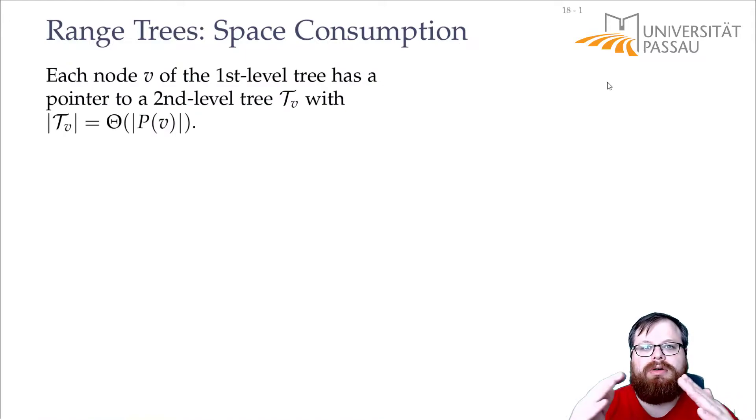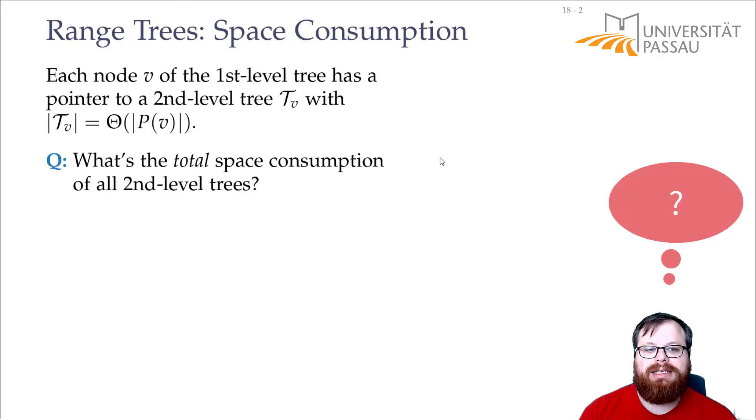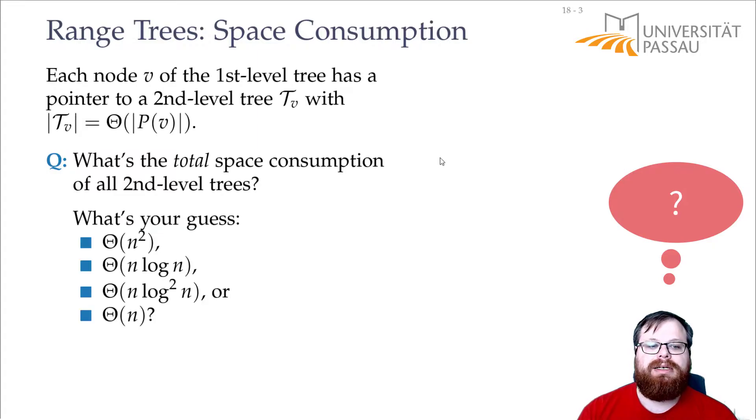Every node in our first level tree points to a second level tree that has exactly as many nodes inside. So what is your guess? What's the total space consumption of all these second level trees together? Is it n squared, n log n, n log squared n, or is it linear?